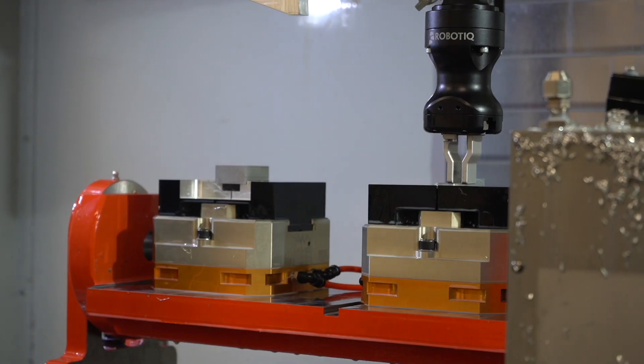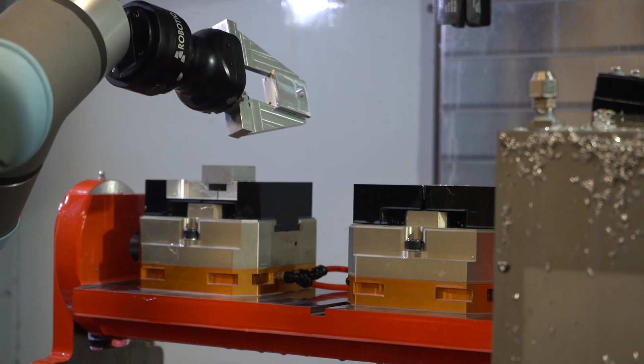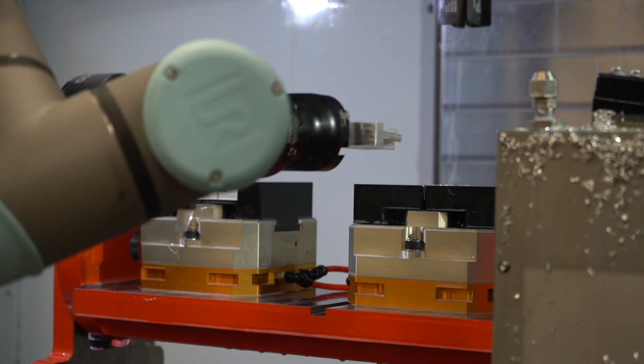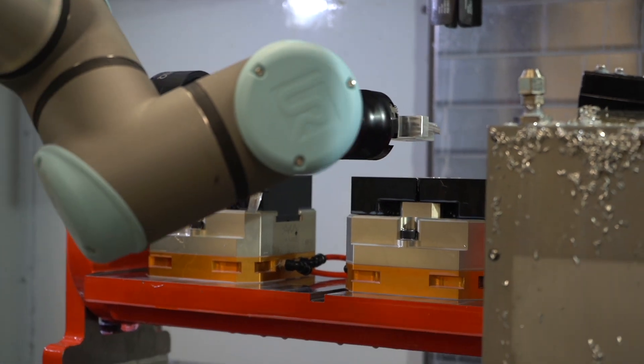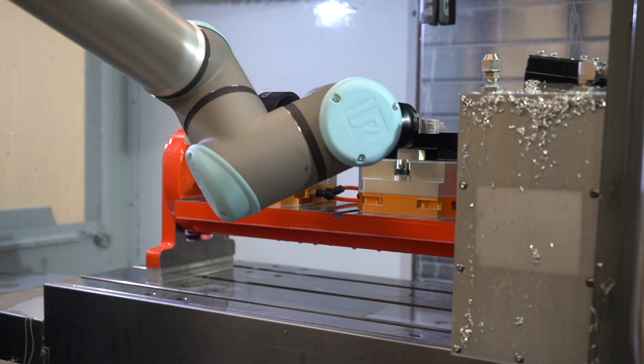The program was actually starting to get a little cumbersome as we were trying to accomplish all these different tasks and locate on multiple axes. And that's when Brian was able to show us some of the tools with the Force Copilot that really made it a lot faster and easier to install. With just a line or two of code from Roboteek, we were actually able to get the same features with a lot less programming.